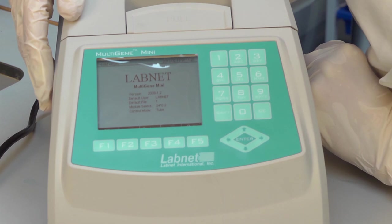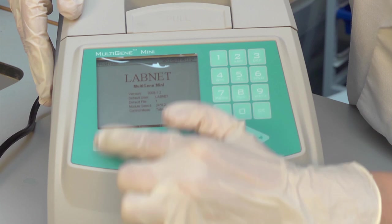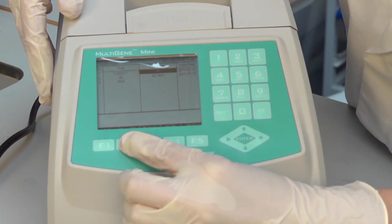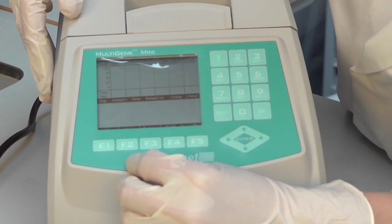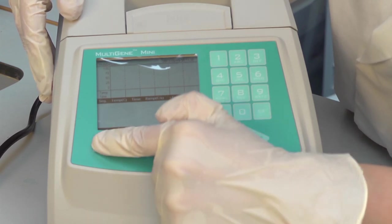To set up a new file on your PCR machine, first select F1 underneath the file option. Then choose new file. Then all you need to do is add a segment. So under plus segment, press this button.